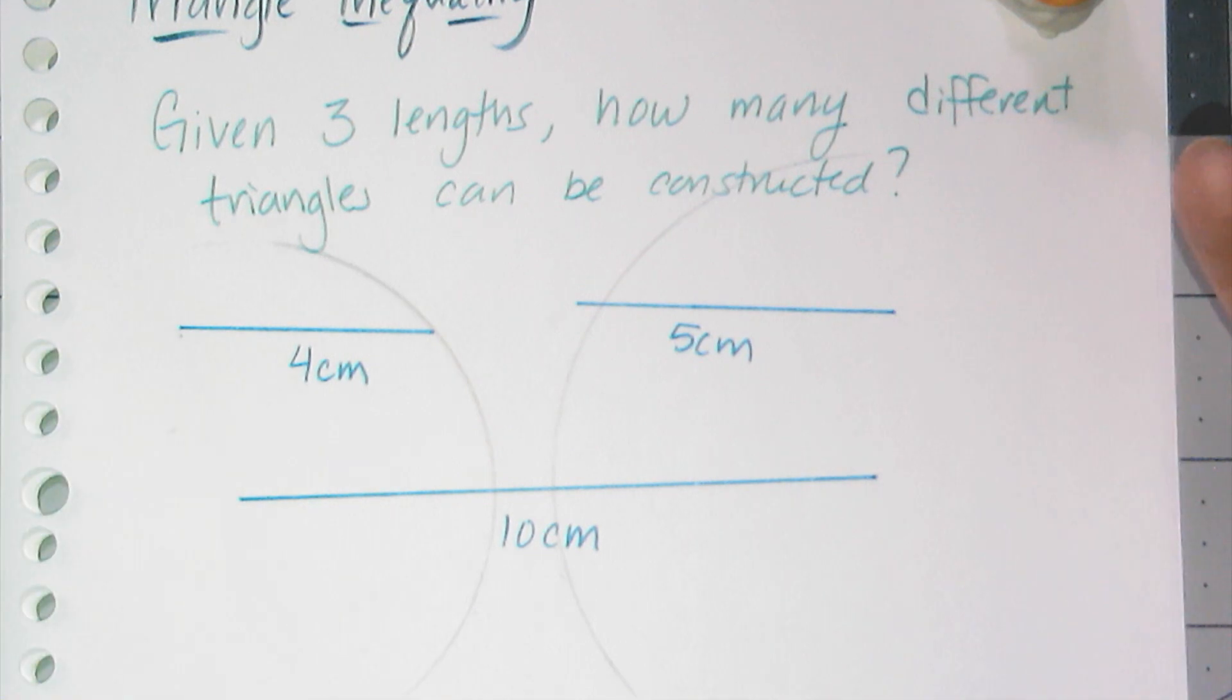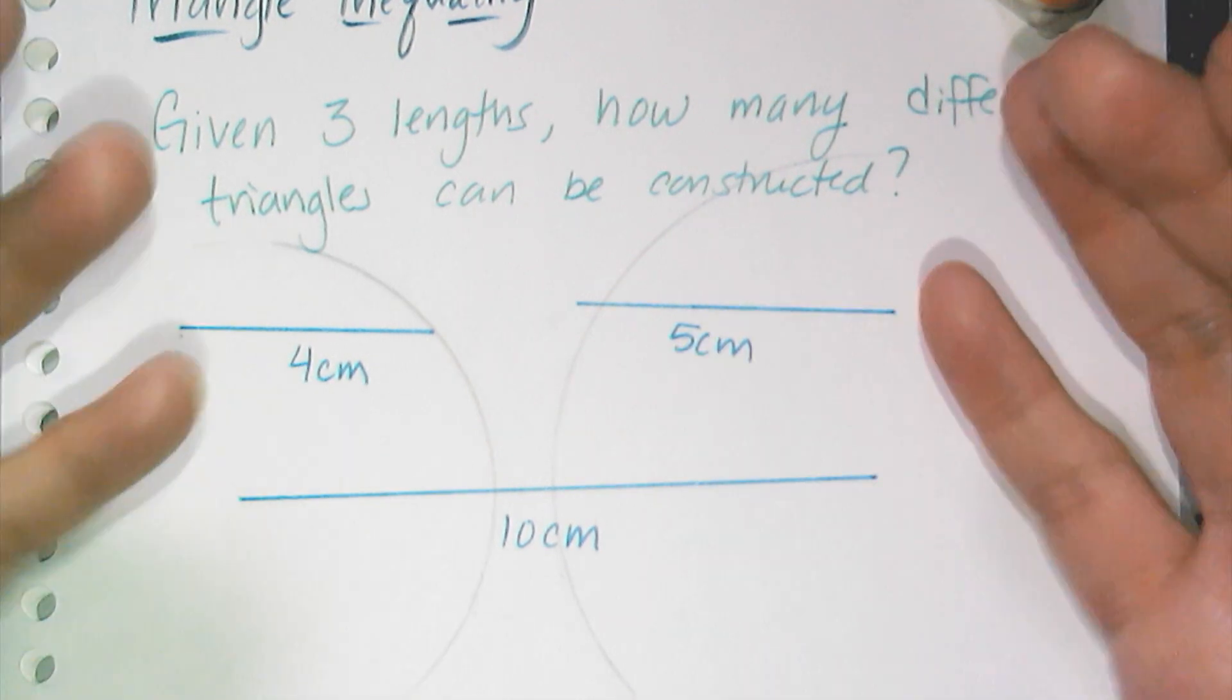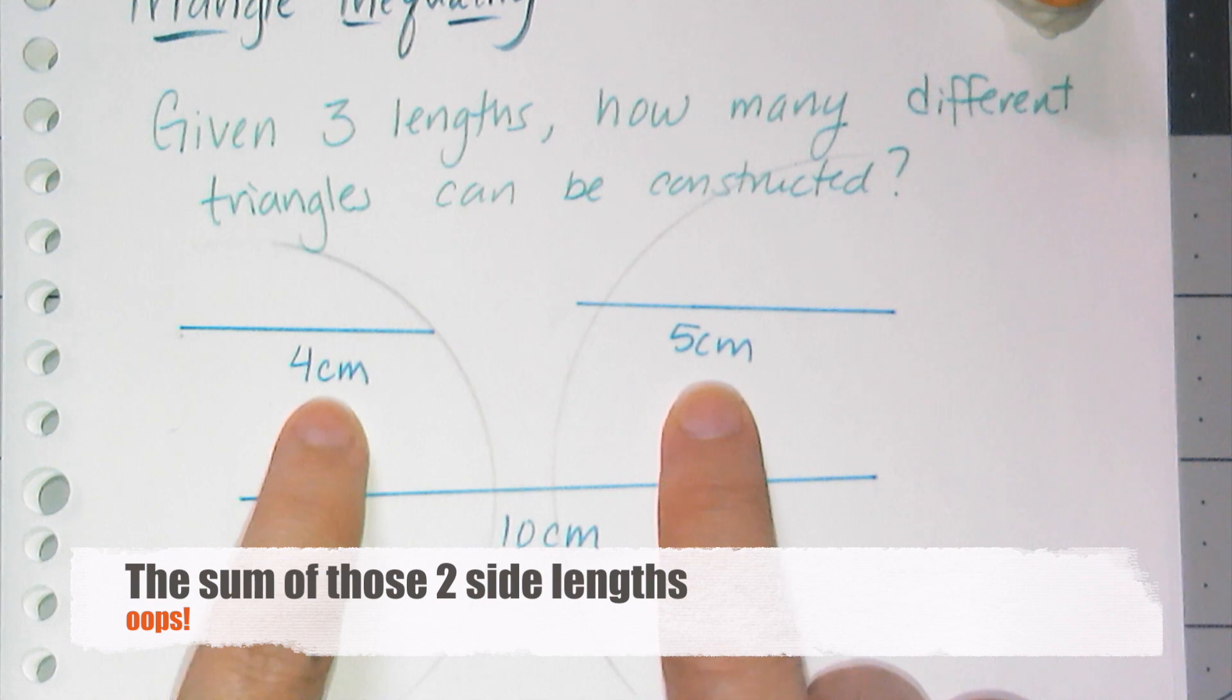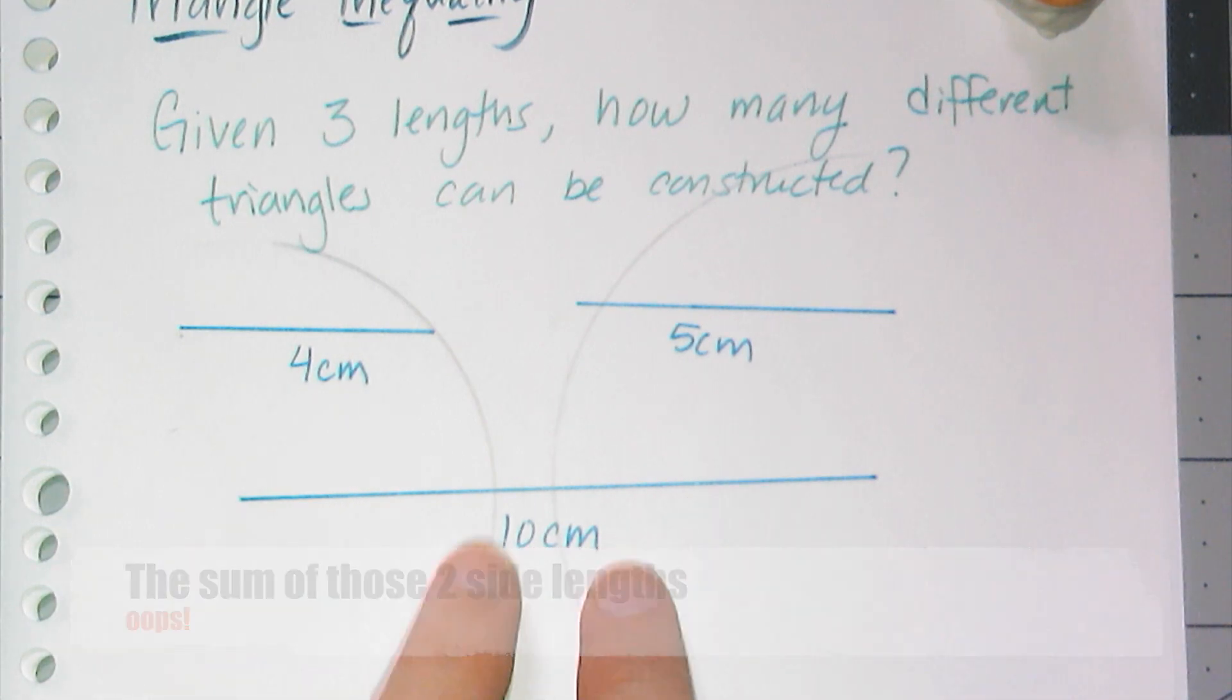So logically I know that if I want to be able to create a triangle, these two side lengths have to be longer than this third side length.